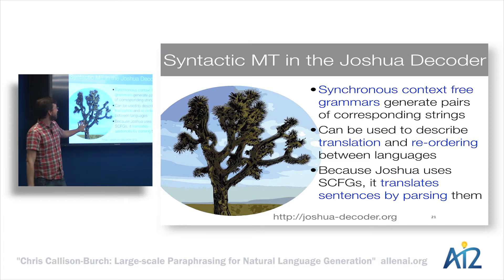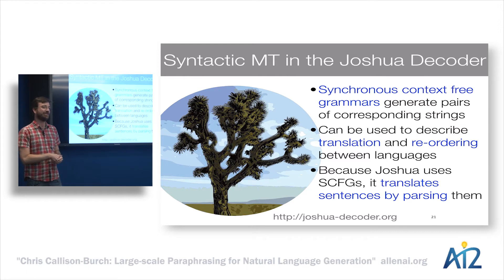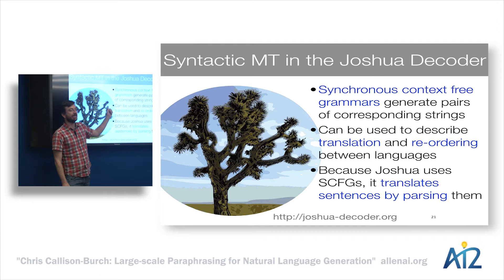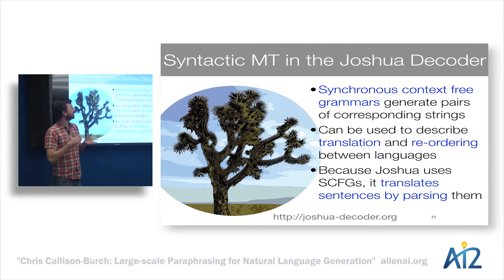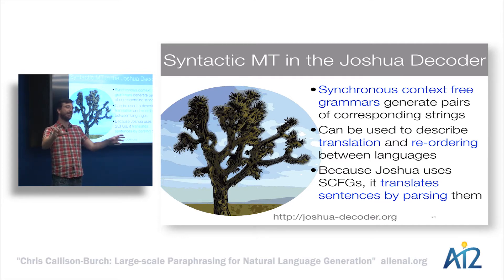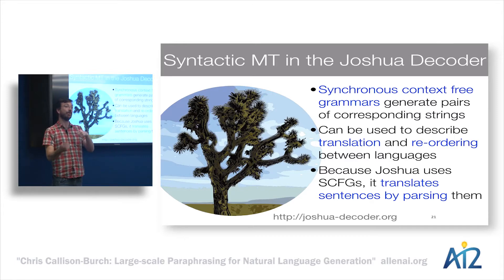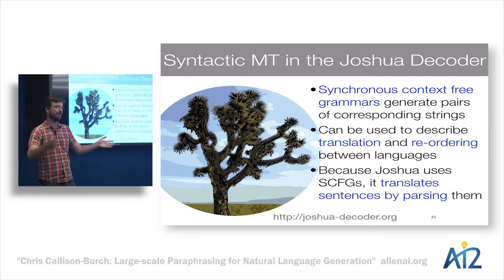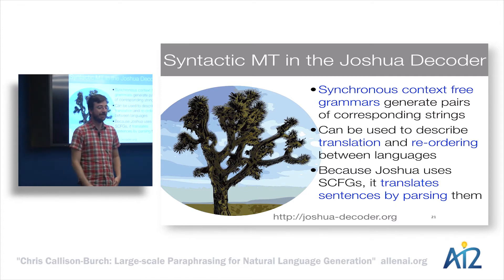My research group develops an open source decoder for statistical machine translation called the Joshua system. As its representation, it uses synchronous context-free grammars, which are great because they generate pairs of strings in correspondence. This means we can both generate translations of words and phrases, but also do the reordering needed for languages that are divergent from each other.